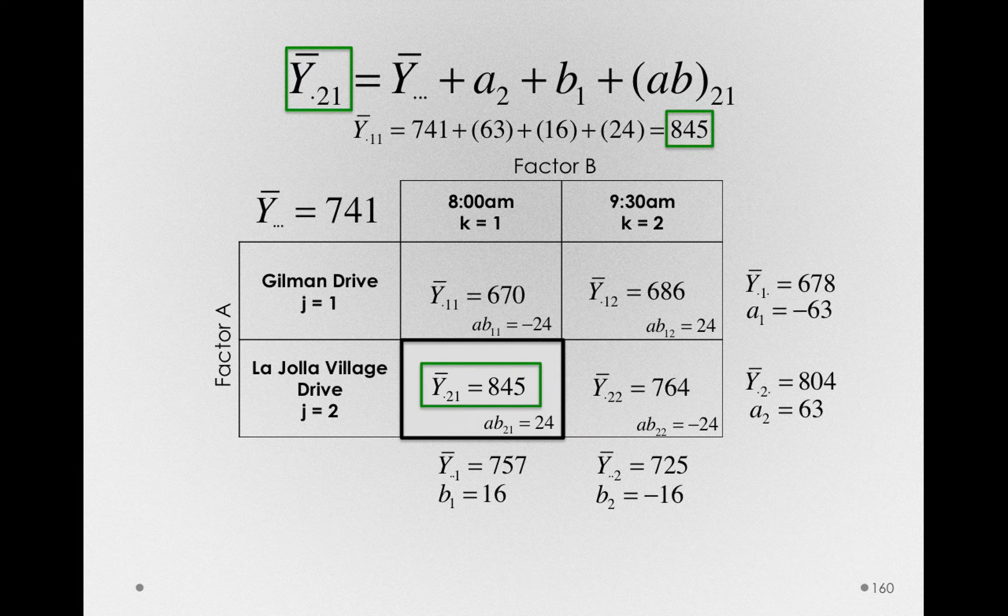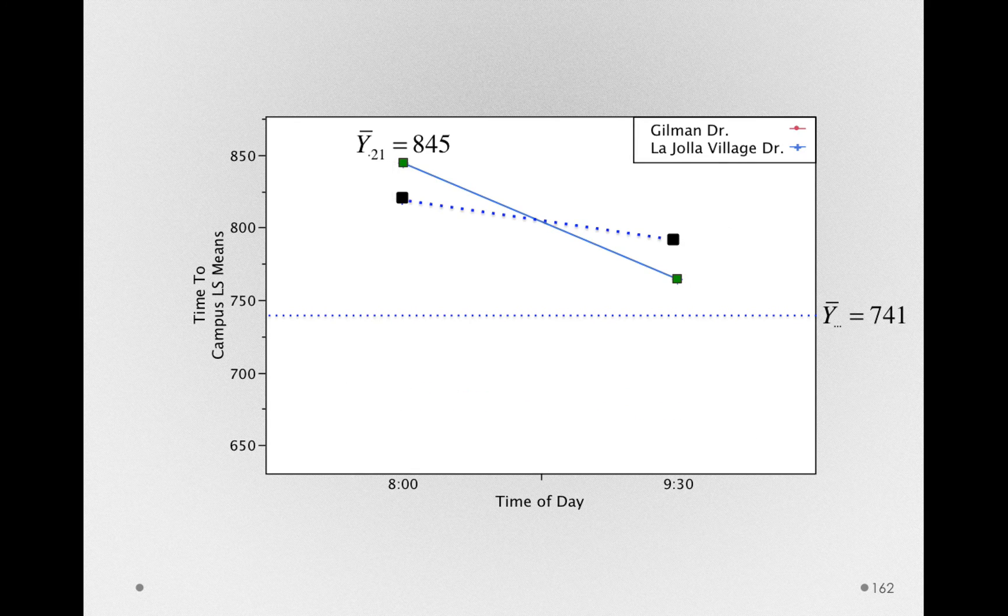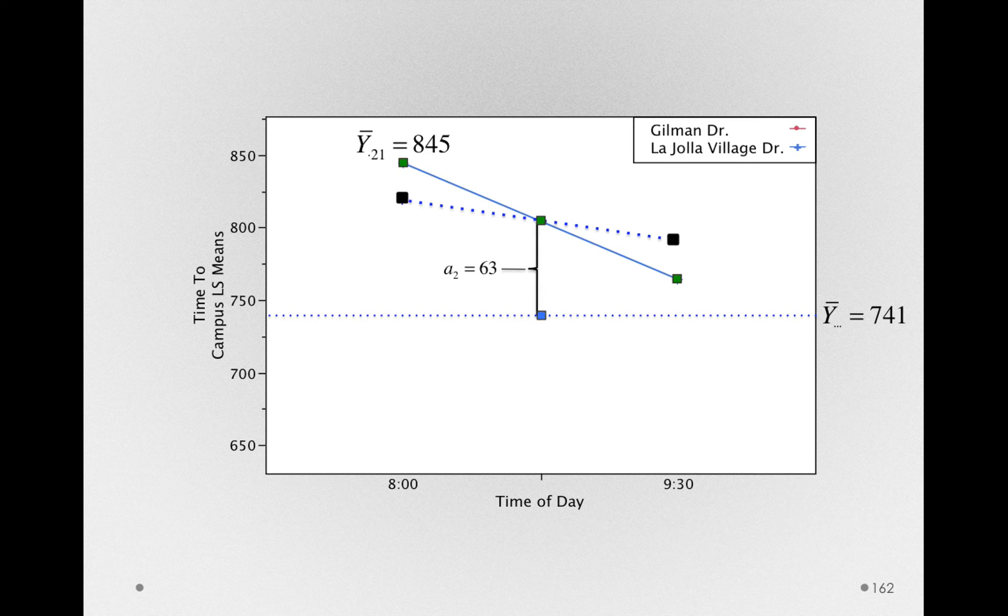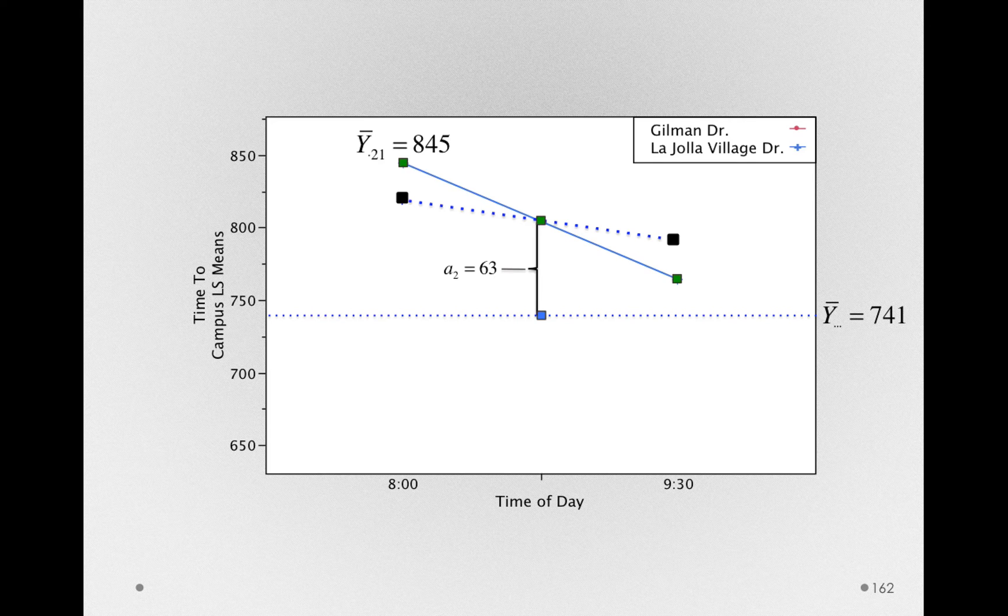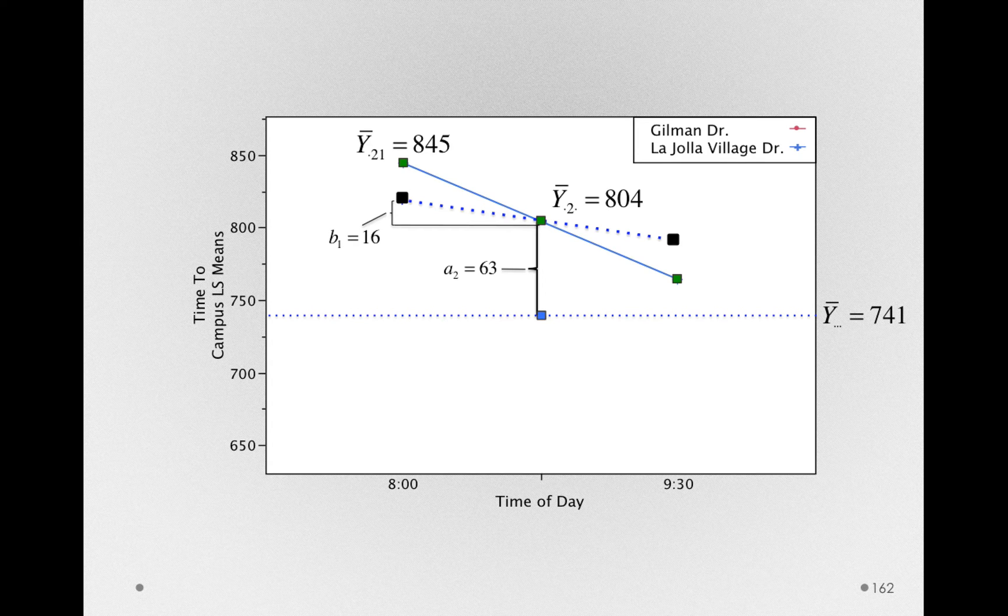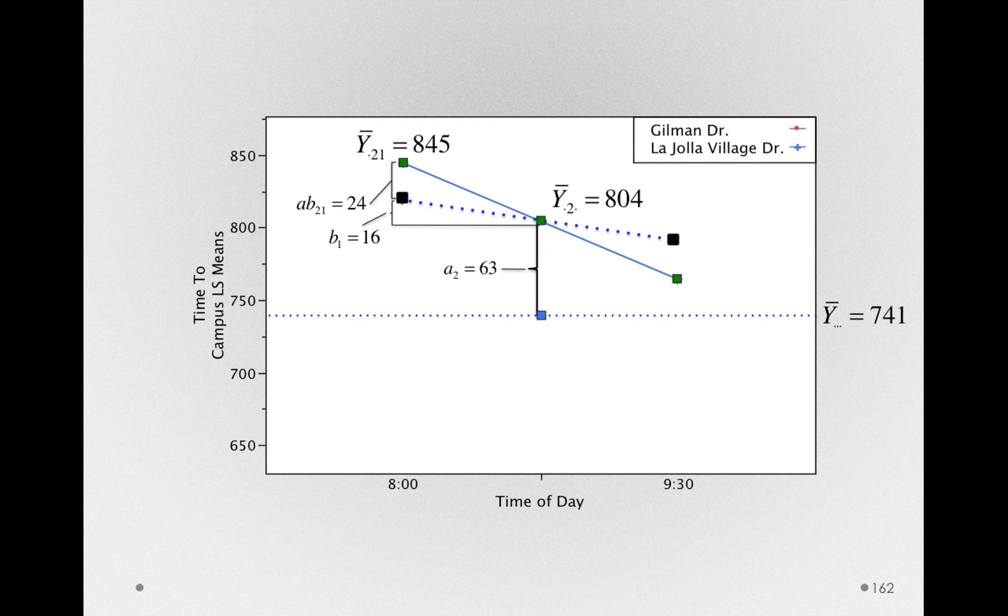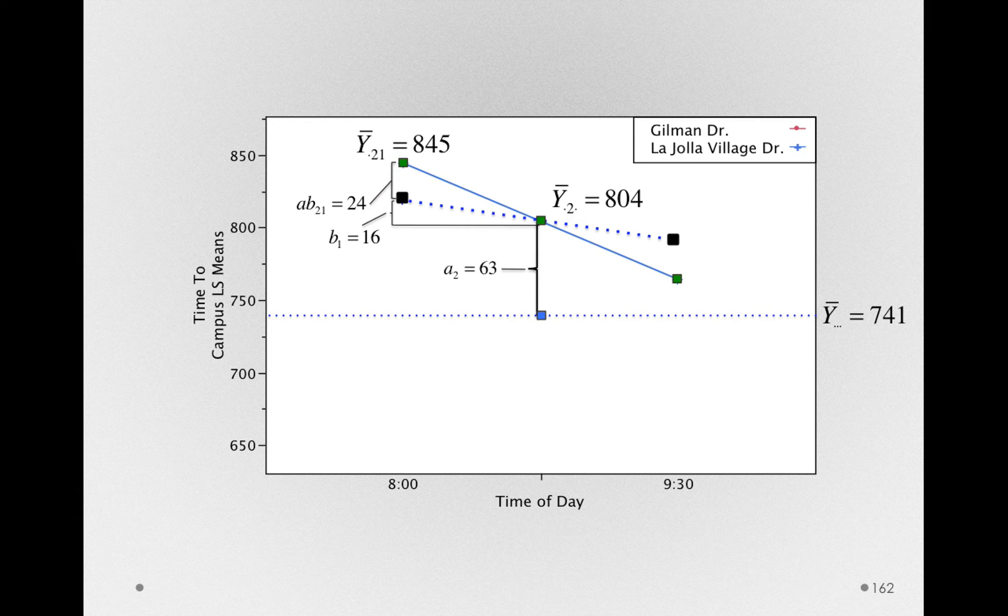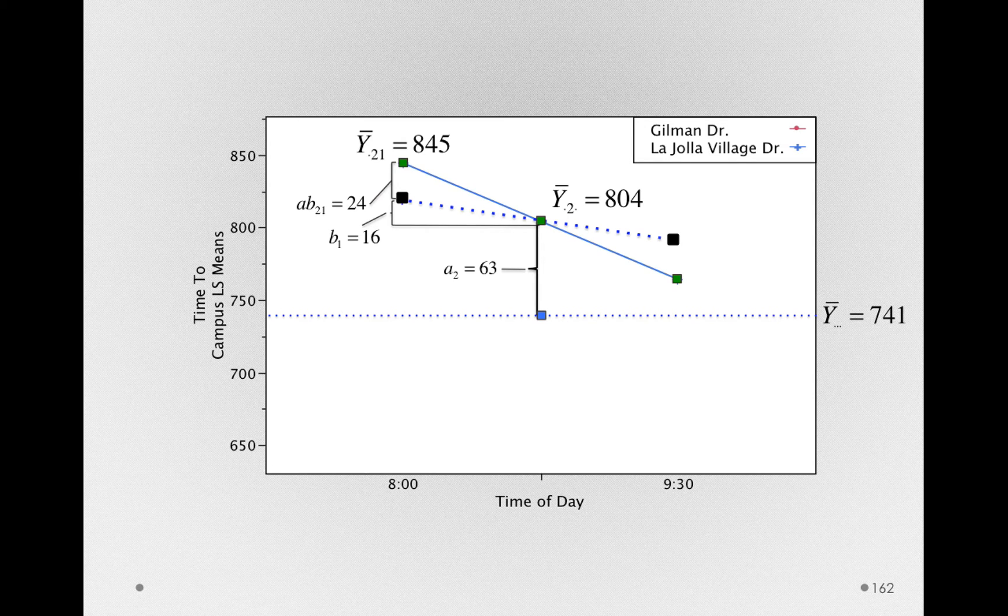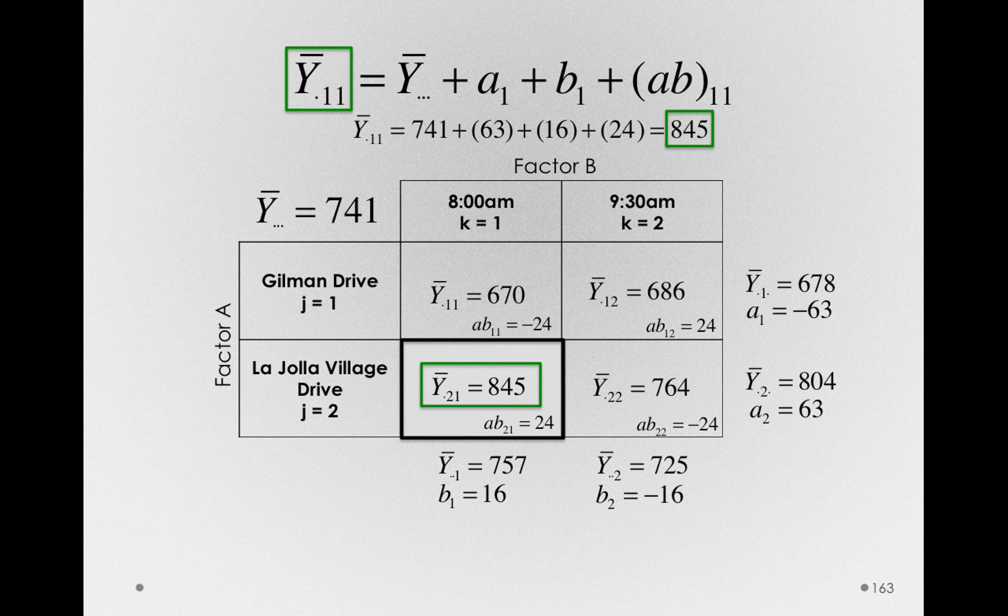We've simply described these means in terms of different pieces. And we've done it on the basis of the geometry here. So notice the mean for 845 is simply a function of first the grand mean plus the offset associated with being in the La Jolla Village Drive group. So 63 seconds longer on average, plus some average effect due to being at 8am. So 16 seconds slower at 8am, which gets us almost there. Plus the interaction offset, the degree to which the mean for La Jolla Village Drive at 8am was different from the sum of the average effects, the purely additive term.